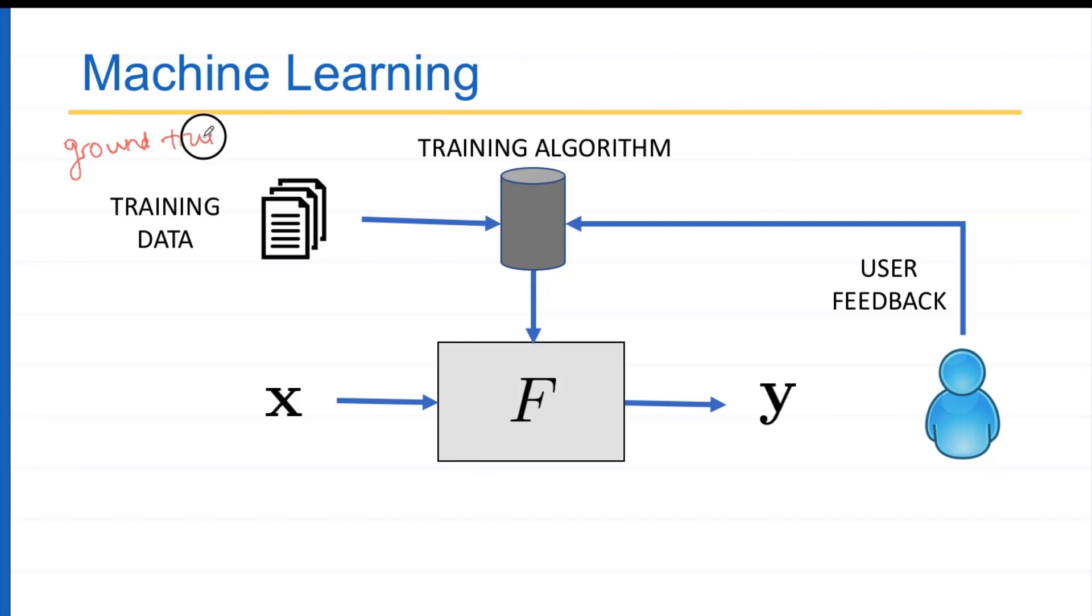Ground truth means the true labels, data with true labels or y desired. The true y, that is called the ground truth. Y desired is the true labels. And then we use this data x and yd pair.